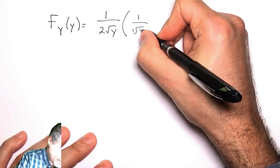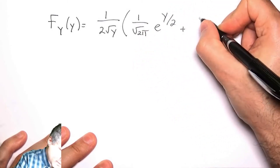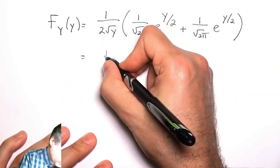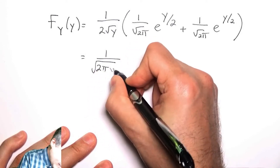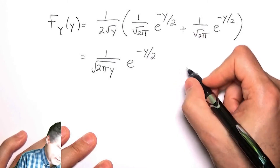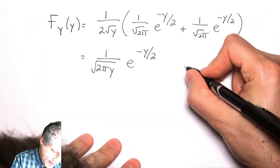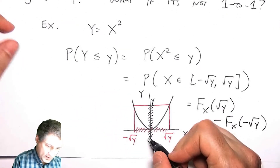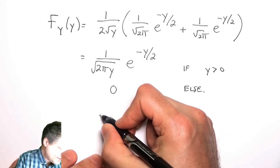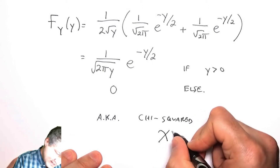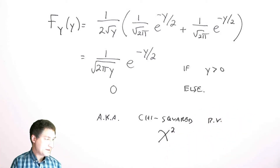Plugging in the Gaussian PDF, the result is (1 / (2 sqrt(2π y))) · e^(-y/2), valid only for positive values of y — since y = x² must be non-negative, we have zero probability for y < 0. This is known as a chi-squared random variable with one degree of freedom, something you're likely to find in a standard table.